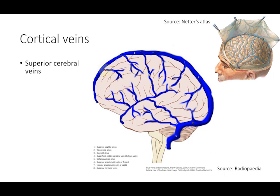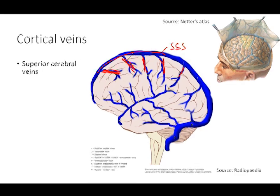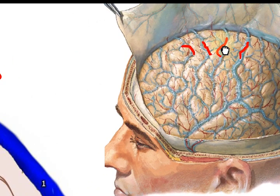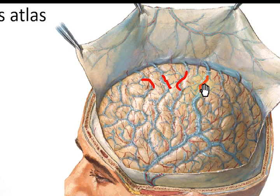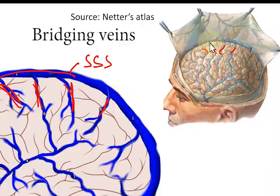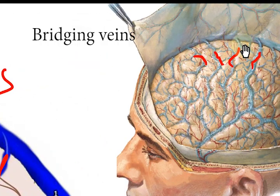These are the superior cerebral veins. You can see that the superior cerebral veins are draining into the superior sagittal sinus. In this picture you can also see the superior cerebral veins going upward and draining into the superior sagittal sinus. If we zoom in, you can see these structures — these are the bridging veins, traversing from the subarachnoid space onto the superior sagittal sinus.